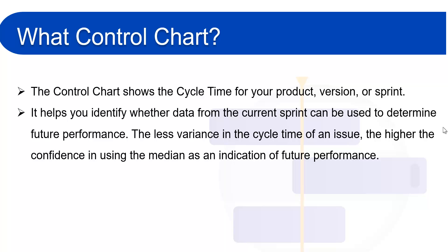The control chart also helps you analyze your team's past performance in a retrospective meeting. For Kanban type projects, you can use past performance to set targets for your team. It also helps you measure the effect of a process change on your team's productivity and provides external stakeholders with visibility of your team's performance.